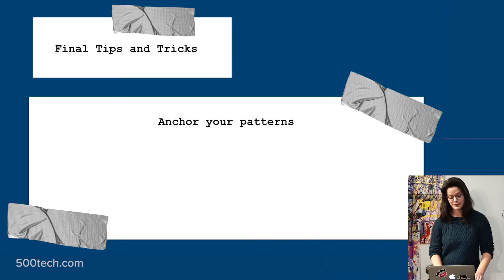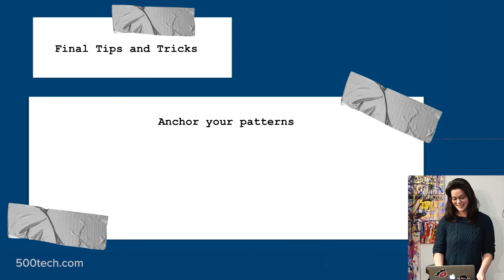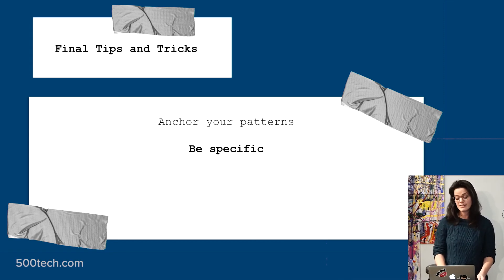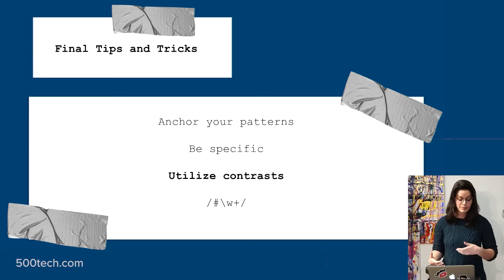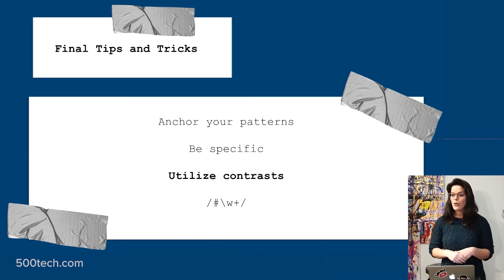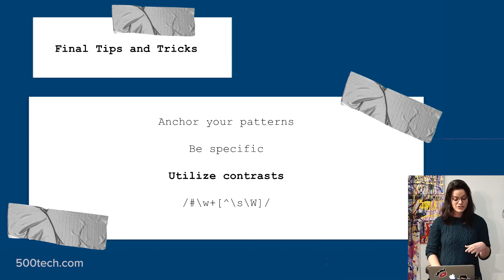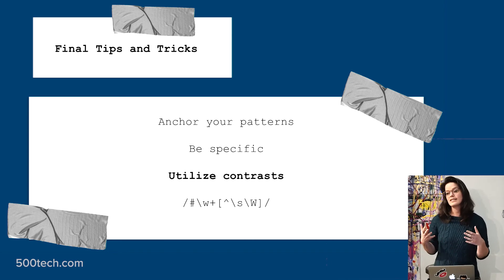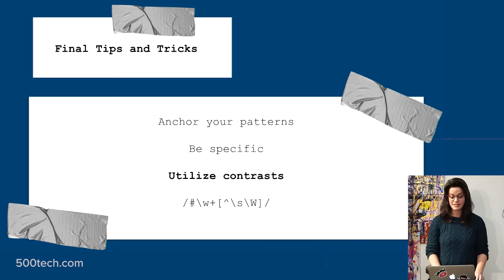Some final tips and tricks: anchor your patterns whenever possible — it gives you more control. Be specific: say what you want, but also say what you don't want. You can aid this by using contrasts. If I was searching for hashtags, I'd match the hash and then all word characters. But some people smash hashtags together or throw in symbols that aren't allowed. So use the caret to tell it not to match spaces and not to match word characters. If you flip a meta character to a capital letter, it flips what it's matching — so instead of matching word characters, it matches anything that's not a word character.